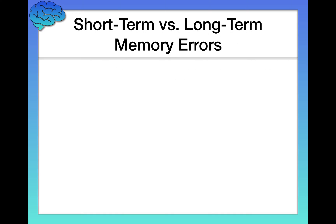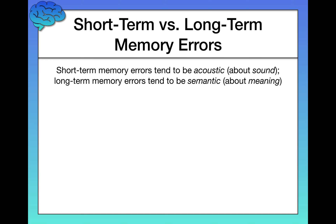One final note on memory errors: short-term memory errors tend to be acoustic — about sound. You simply misheard somebody, so the information in your 10-to-20-second short-term memory is off. Long-term memory errors, in contrast, tend to be semantic — about meaning. For example, a long-term memory error might be mistaking a canary for a finch, because you never clearly learned the difference. A short-term version might be mistaking a canary for a Clefairy — a Pokémon — because you heard someone wrong and what gets passed to long-term memory ends up being totally off.